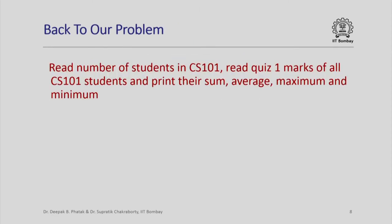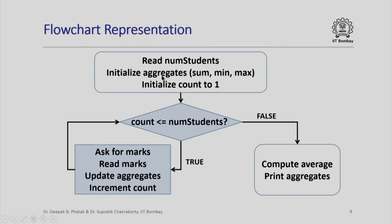Looking back at the problem that introduced iteration idioms: read the number of students in CS 101, read quiz 1 marks of all students, and print their sum, average, maximum, and minimum. Using a while loop we can solve this. The flowchart matches exactly the while loop pattern: read the number of students, initialize aggregates, initialize the counter to 1, check if the counter is less than or equal to the number of students, read marks, update aggregates, increment the count, then loop back. Once done, compute the average and print aggregates.